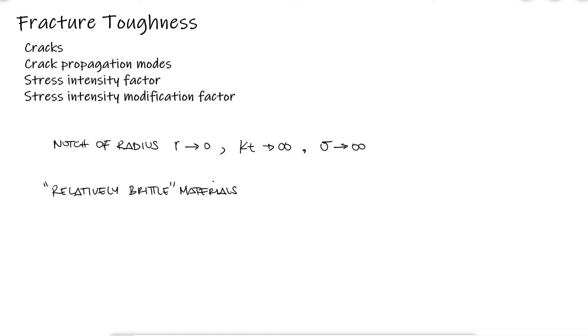Also, not only brittle materials fracture. Most materials have a ductile to brittle transition temperature that bring even low carbon steel and strong aluminum alloys to a relatively brittle state when temperature drops.